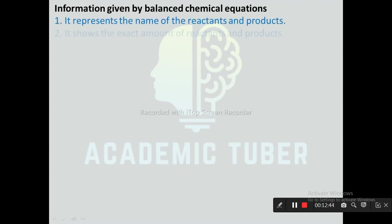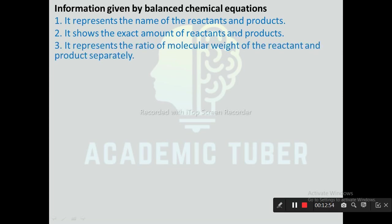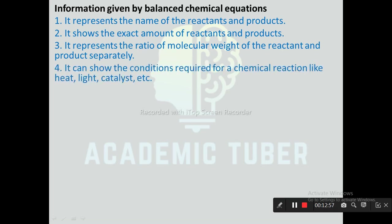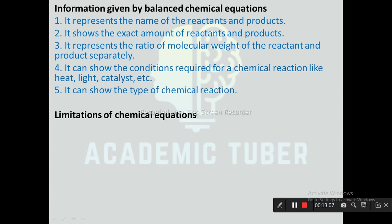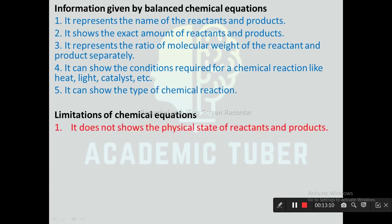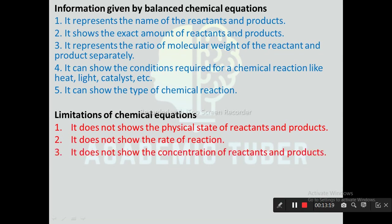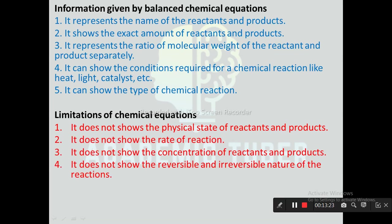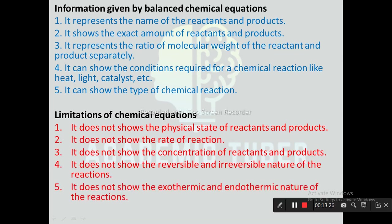Information given by a balanced chemical equation: It represents the name of reactants and products. It also shows the exact amount of reactants and products. It represents the ratio of molecular weight of the reactants and products separately. It can show the condition required for the chemical reaction like heat, light, catalyst, etc. It can show the type of chemical reaction. Limitations: It does not show the physical state of reactants and products. It does not show the rate of reaction. It does not show the concentration of reactants and products. It does not show the reversible and irreversible nature of the reaction. It does not show the exothermic and endothermic nature of the reaction.